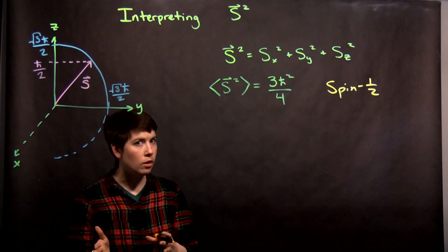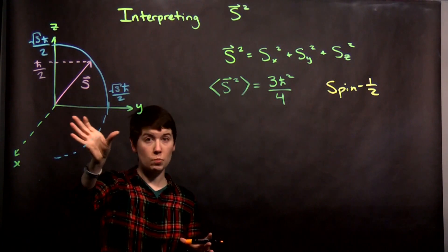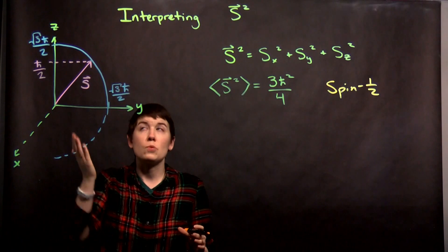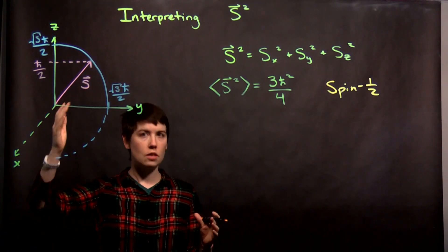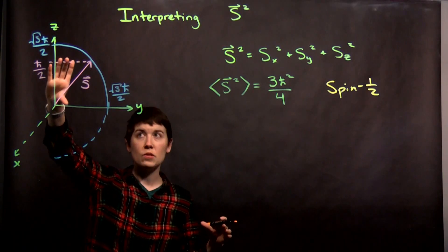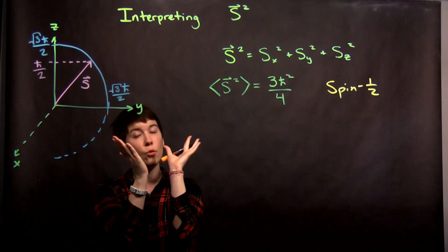We cannot know both the spin in z and the spin in y at the same time. And so we also can't know the spin in z and the spin in x at the same time. So if we have measured that it is spin up in z, again, there has to be uncertainty in x and y. That's what that cone represents.